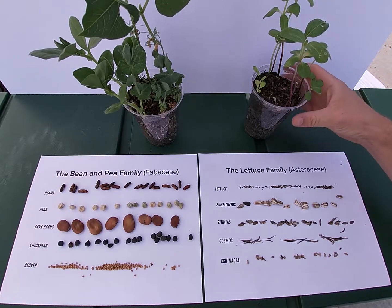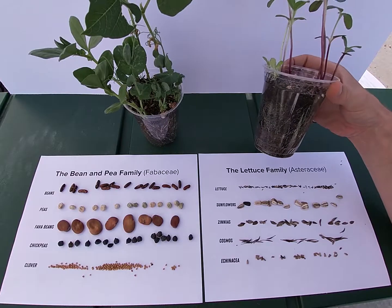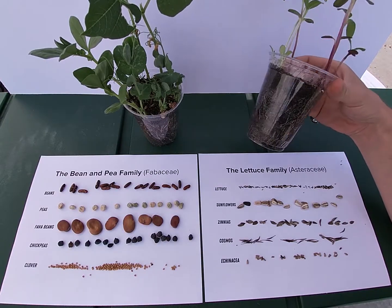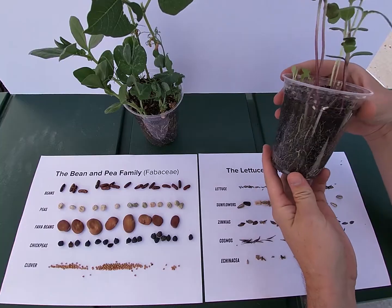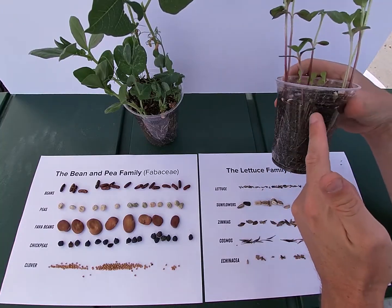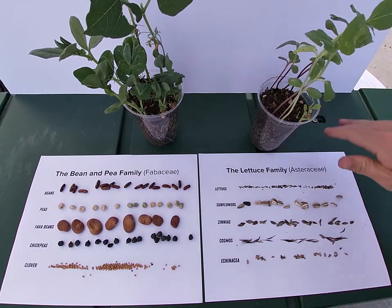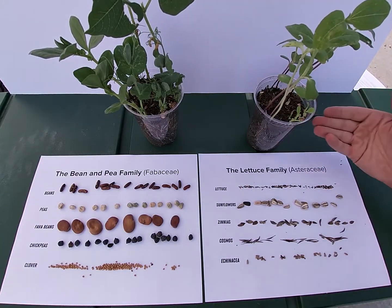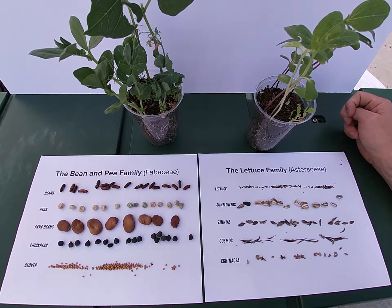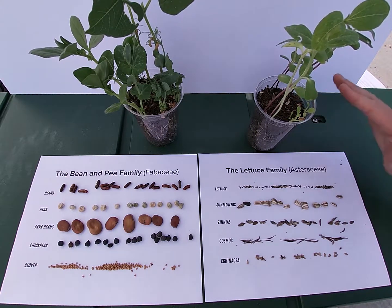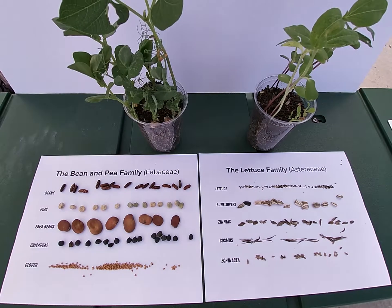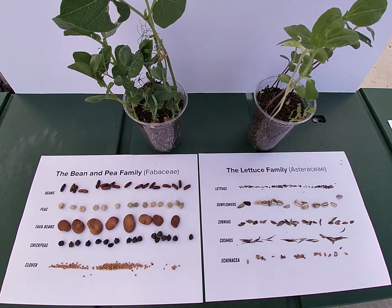A great way to get to know your seeds is by germinating them. These are root viewing cups. I've planted seeds all along the edge of this cup — all of these seeds are in the lettuce family. You can grow these seeds and start to see some of those similarities. This is a really fun activity for the classroom, and obviously you can do the same out in your garden. So let's talk about how seeds actually germinate and what they need.